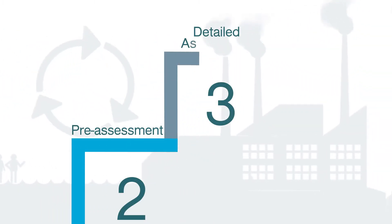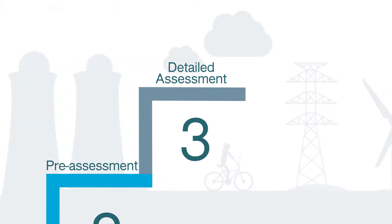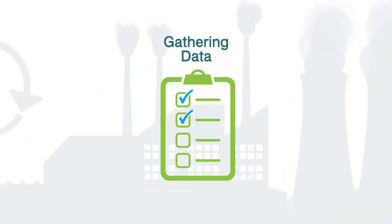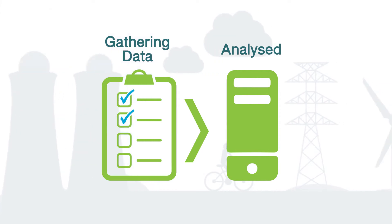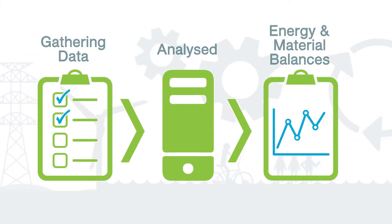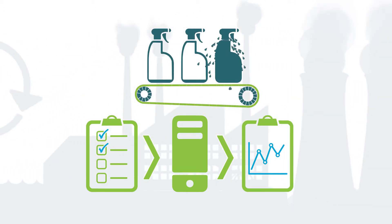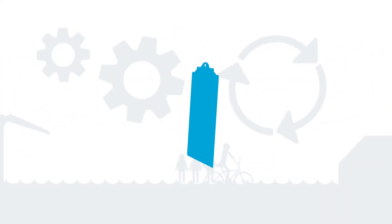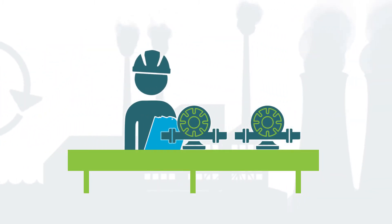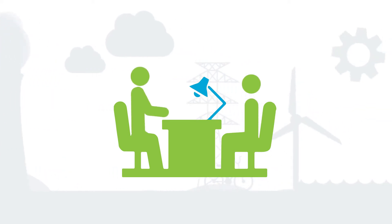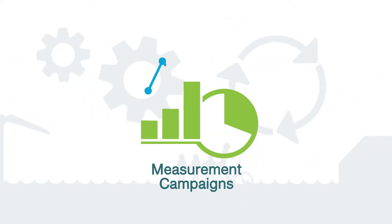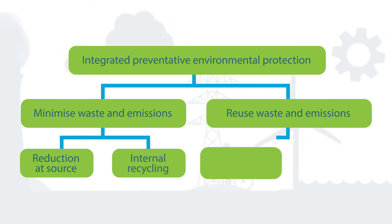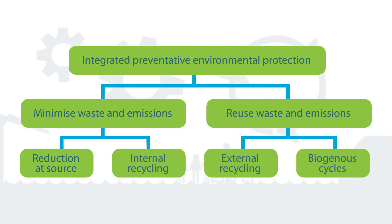Step 3 is the detailed assessment, informed by the focus areas identified during the pre-assessment stage. Here, the focus is on gathering more detailed and accurate data. This data is analysed and interpreted to develop the required energy and material balances, to discover where energy and materials are used in the organisation and where losses occur, and to then identify options to address them. Additional data gathering is done through walkthroughs of the organisation's facilities, interviews with respective process or production staff, or, where required, measurement campaigns. This additional data gathering assists the assessment team to better understand any constraints or challenges that may need to be considered in the assessment recommendations.